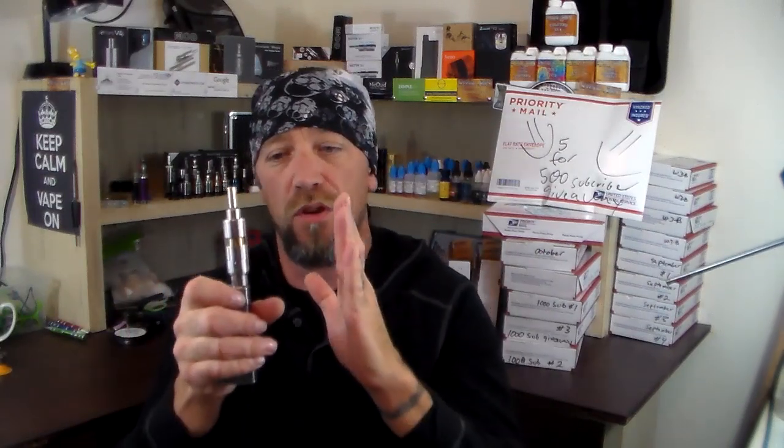We're going to be using some 30 gauge Kanthal. We're going to wrap this coil around a 2mm micro screwdriver and get it right around 1.5 ohms. I had a viewer comment and asked me to do a dual coil build on the Kayfun around 1.5 ohms, so today Chris, this is your day. I told you I was going to do it, so here it is buddy.